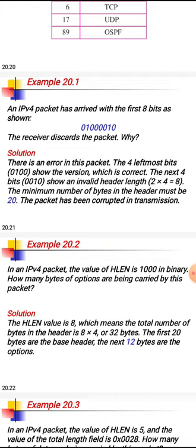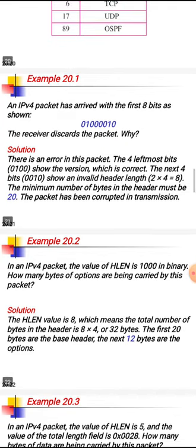Example 1: An IPv4 packet arrived with the first 8 bits as given. The receiver discards the packet because there is an error. The 4 leftmost bits 0100 show version 4, which is correct. But the next 4 bits 0010 show an invalid header length: 2 × 4 = 8 bytes. The minimum required is 20 bytes. So the packet was corrupted in transmission and must be discarded.